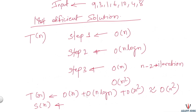For space complexity, apart from the input array we are not using any extra space, so it is O(1). However, note that we are modifying the input array. If the interviewer says the input array is read-only, can we still solve it in O(n²) time? The answer is yes, but in that case we will use O(n²) extra space.